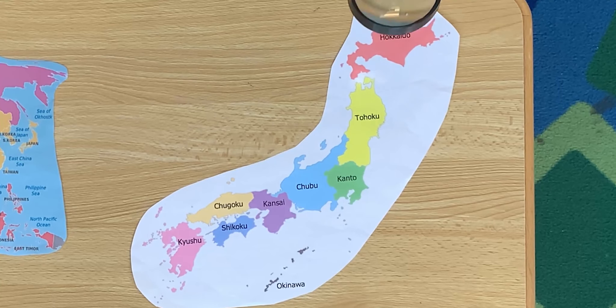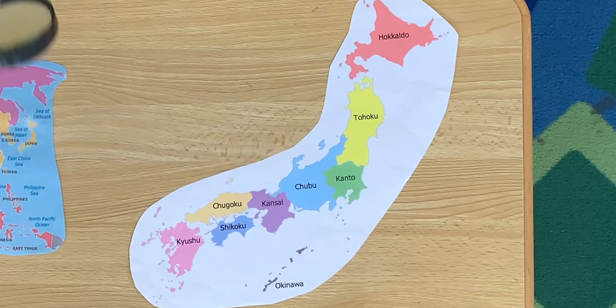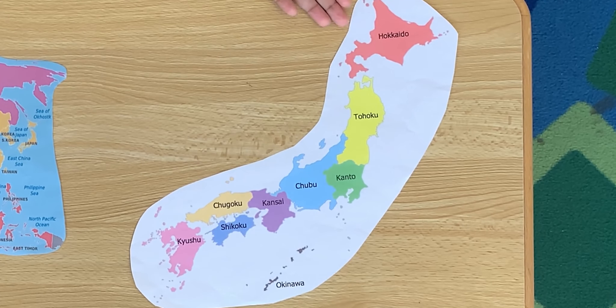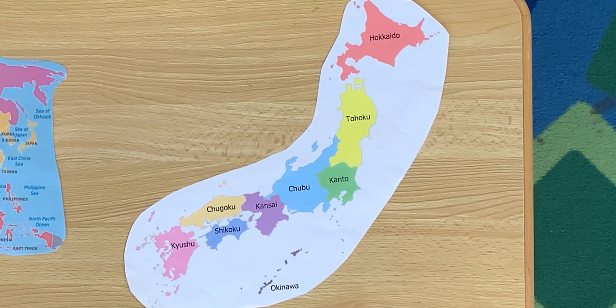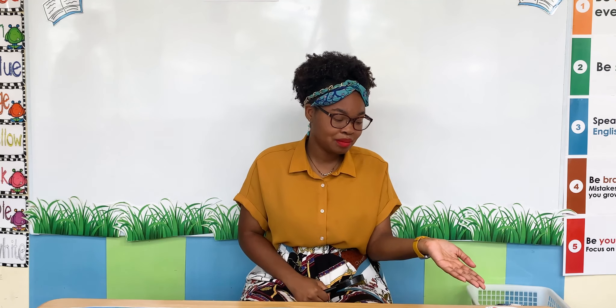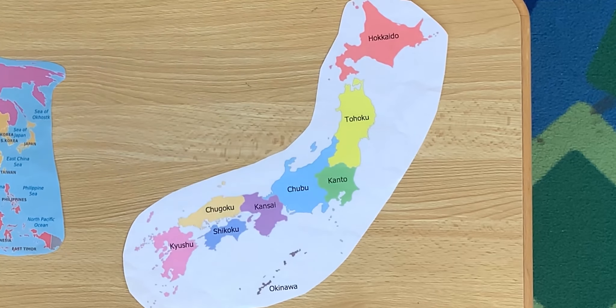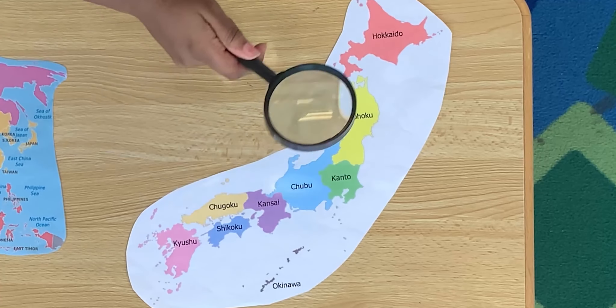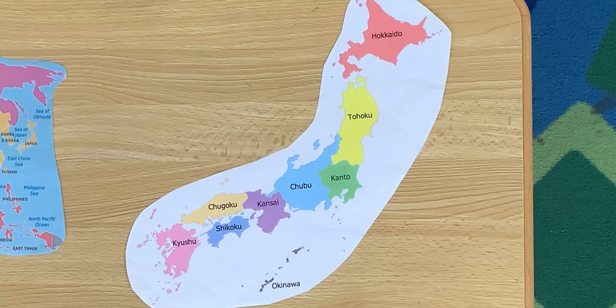Now we're getting closer, but I still can't see Learning Tree yet. Let's look in Japan and see what region Learning Tree is in. In Japan there are many different regions. Is it up here in Hokkaido? No, that's too far north. Is it down here in Kyushu? No, that's too south. I think it's somewhere in the middle — oh, I can see it! What region is this?